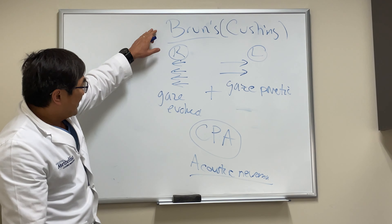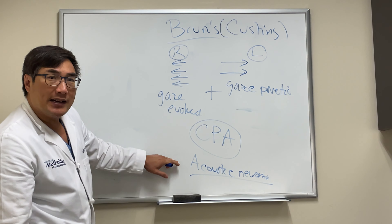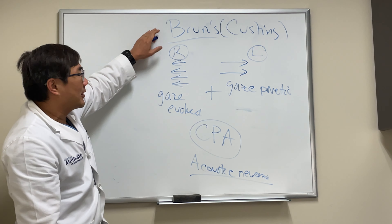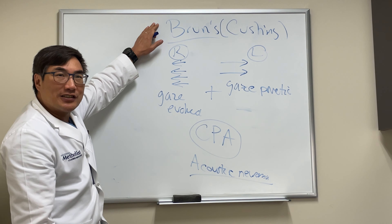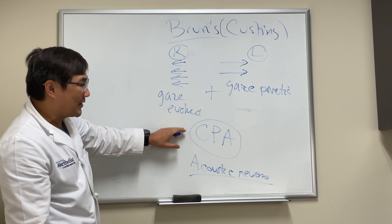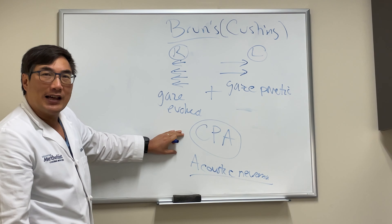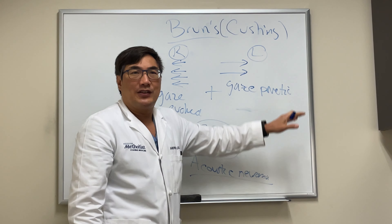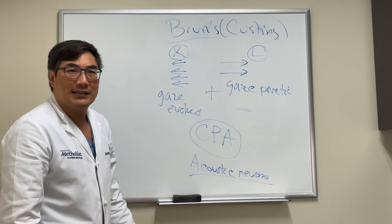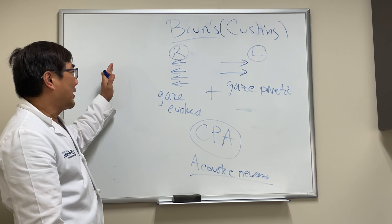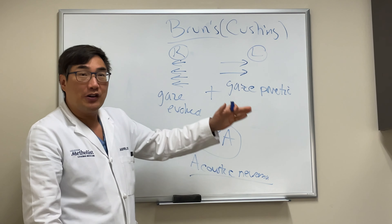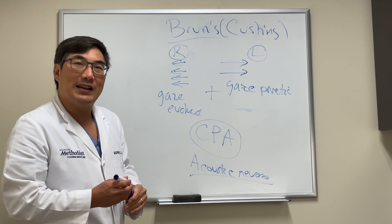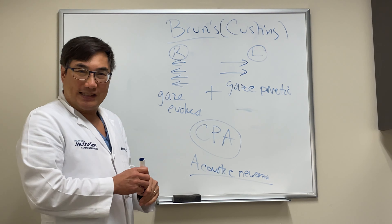So it's A, B, C. An acoustic schwannoma is the most common cause of the Bruns-Cushing nystagmus. It localizes to the cerebellopontine angle on the side of the gaze-paretic nystagmus. It's a combination of gaze-evoked and gaze-paretic nystagmus in the same patient.